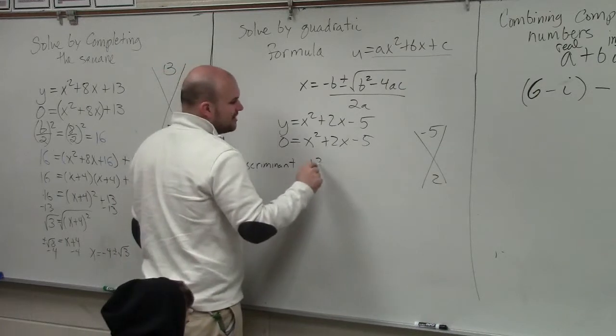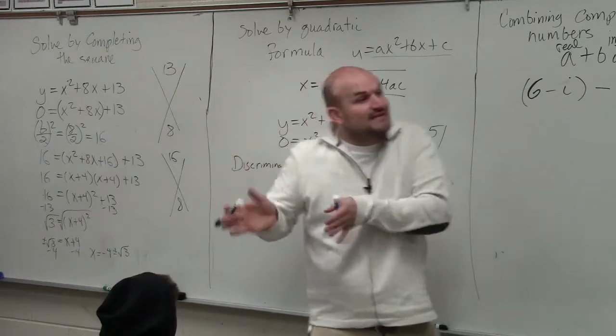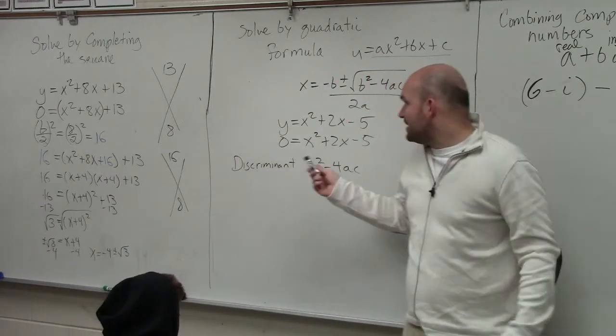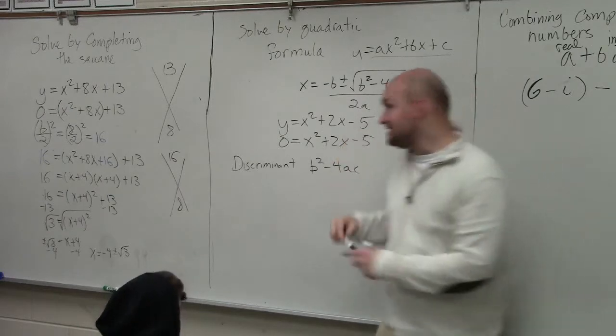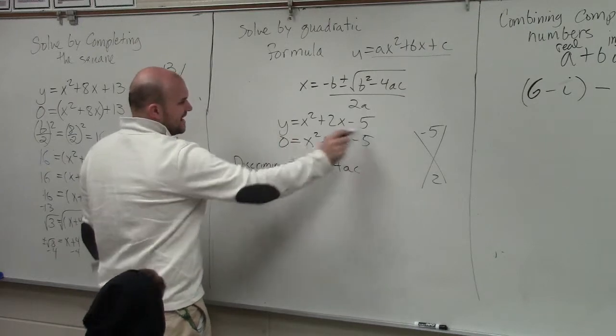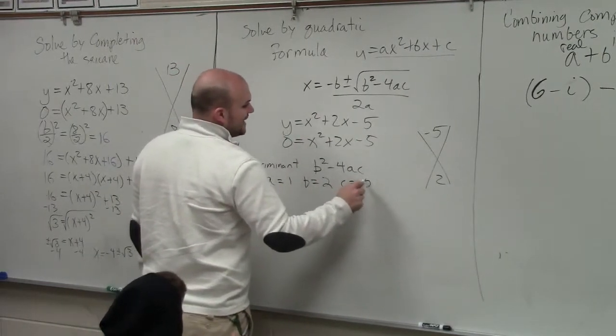If you guys remember, the discriminant was b squared minus 4 times a times c. So we make sure all the variables and everything is on the same side. We set it equal to 0. Then we identify what a, b, and c are. a, in this case, is equal to? What is a? 1. b is equal to 2. And c is equal to negative 5.